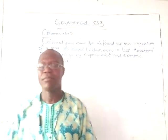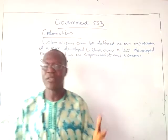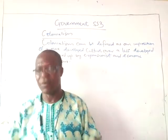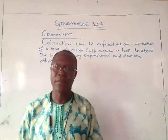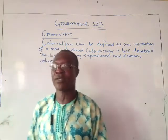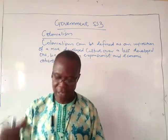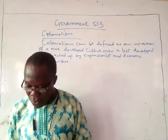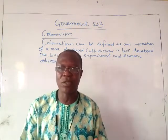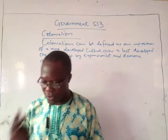Before Europeans came, there were different kingdoms, emirates, and caliphates in the north, obatship in Yoruba land, and other parts of West Africa and Nigeria. When they came, they introduced a modern system of government under the umbrella of democracy. Before their coming, there was nothing like elections in West Africa. They brought democracy that introduced elections, as well as the organs of government: the legislature for lawmaking, the executive for execution of policies, and the judiciary for interpretation of laws.